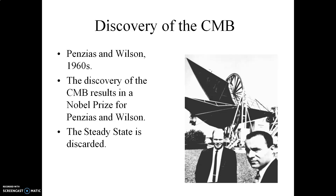What happened to Alpher? Alpher continued to toil in obscurity and didn't get anything at all. He was so disgusted by the entire episode that long before Penzias and Wilson made their discoveries in the 1960s, Alpher had actually left academia completely. He went to work for the Westinghouse Company as an engineer and basically spent the rest of his life building washing machines.